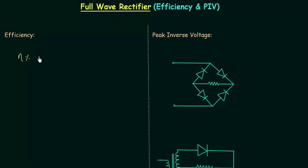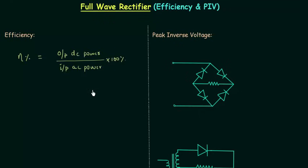Percentage efficiency is equal to output DC power divided by input AC power. We already know power is equal to I squared multiplied by R. So output DC power is equal to IDC squared multiplied by R, where R is the load resistance, divided by IRMS squared multiplied by R, which is the input AC power.